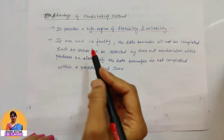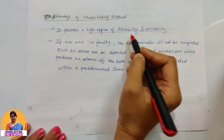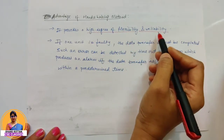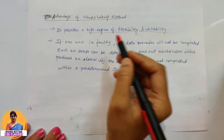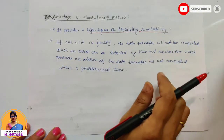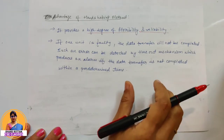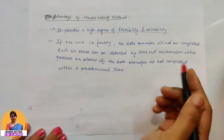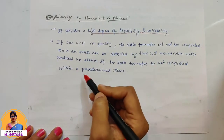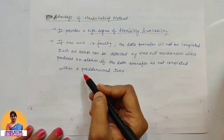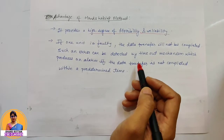In summary: in source initiated handshaking, two signals are used — data valid, and the return acknowledgement is data accepted. In destination initiated, the signals are ready for data and the return is the data valid signal. Let's see two advantages of the handshaking method. There is a high degree of flexibility and reliability because both units actively participate in the successful completion of data transfer. If one sends a control signal, the other replies with a control signal, so they are actively communicating reliably.